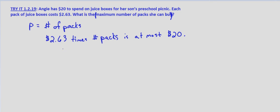Well, 2.63 times the number of packs, the number of packs we defined as P, is at most $20. So at most means less than or equal to $20. It can be $20 because she has $20, so that's why we include the equals sign. But it can't be any more than that. So it has to be less than or equal to 20.